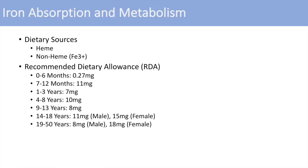From ages 19 to 50, males typically need about 8 milligrams while females need about 18 milligrams to compensate for blood loss during menses. After age 51, everyone needs about 8 milligrams of iron per day. For pregnant women, that's when you need the most — about 27 milligrams per day, because of the increase in blood volume for both the fetus, placenta, and the woman.